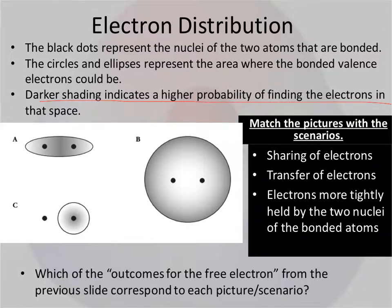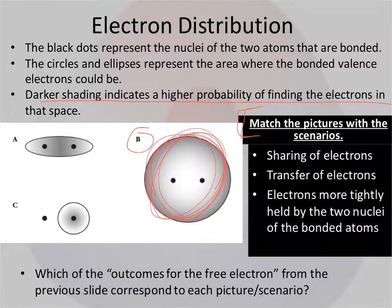We're going to try to match the explanations with the pictures. So sharing of electrons, complete sharing of electrons. Hopefully you're thinking picture B, so it seems like the electron density surrounds both of them, so it's just kind of sharing of electrons all in general.